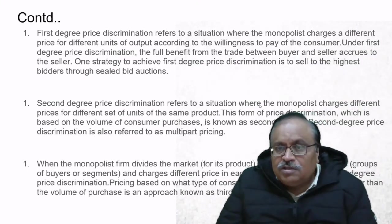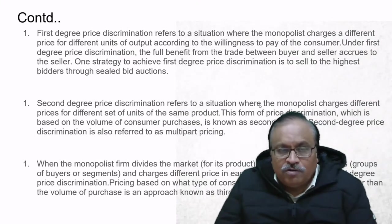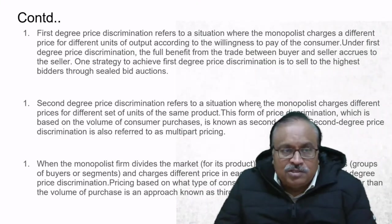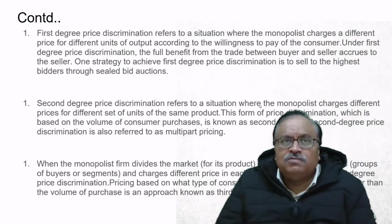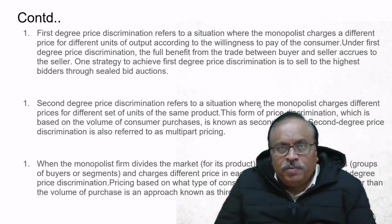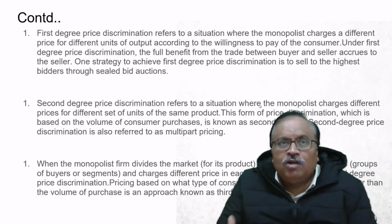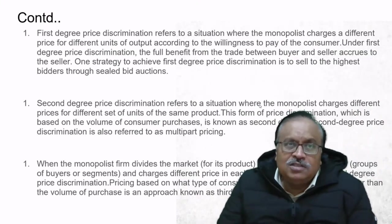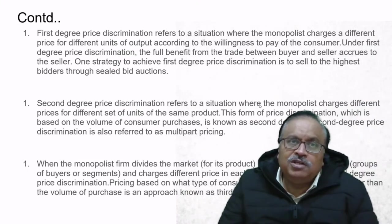Second-degree price discrimination refers to a situation where the monopolist charges different prices for different sets of units of the same product. This form of discrimination is based on the volume of consumer purchases. For example, if we purchase five soaps at a time, we do not pay the individual price multiplied by five—we get a discount. In bulk purchases a discount is given, which is how second-degree price discrimination works.